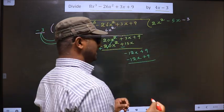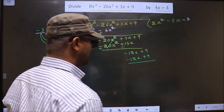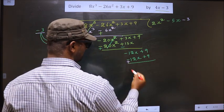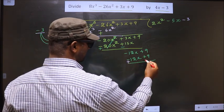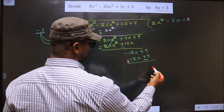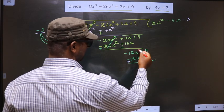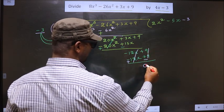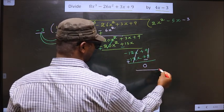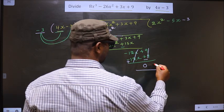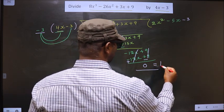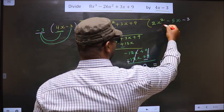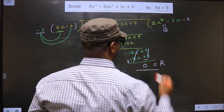Now we should change the signs. Here it is minus, you make it plus. Here it is plus, you make it minus. This cancels out and this cancels out — we get 0. Thus, the remainder is 0 and the quotient is 2x² minus 5x minus 3.